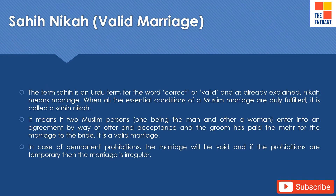Sahi nikah or valid marriage. The term sahi is an Urdu expression for the word correct or valid, and nikah means marriage. When all the essential conditions of a Muslim marriage are duly fulfilled, it is called a sahi nikah. It means if two Muslim persons — one being the man and the other the woman — enter into an agreement by way of offer and acceptance, and the groom has paid the meher to the bride, it is considered a valid marriage. In case of permanent prohibitions, the marriage would be void, and if the prohibitions are temporary, then the marriage is considered to be irregular.